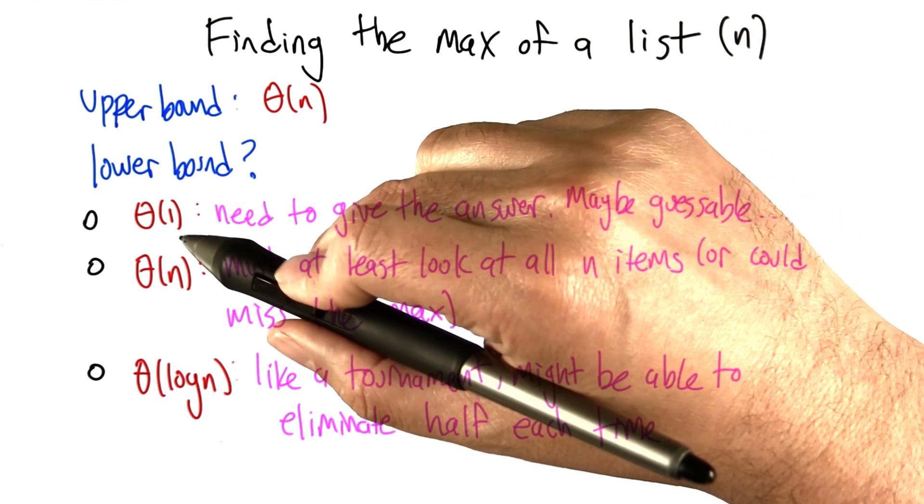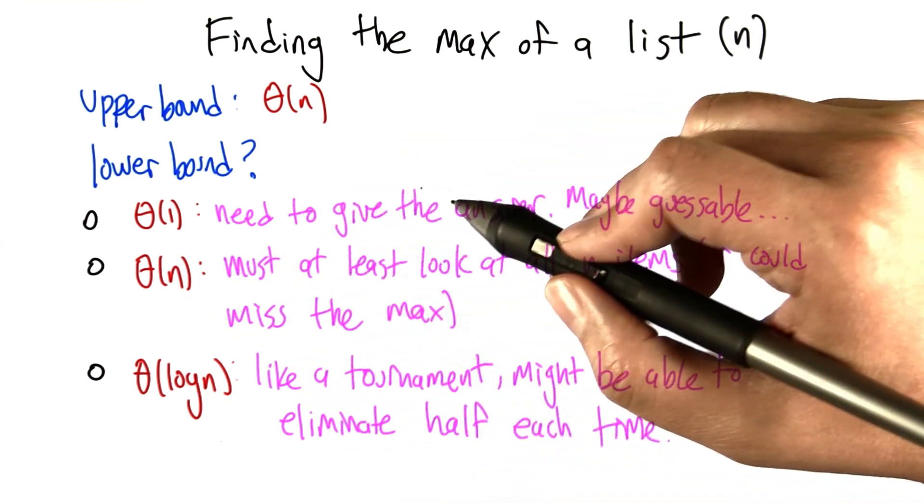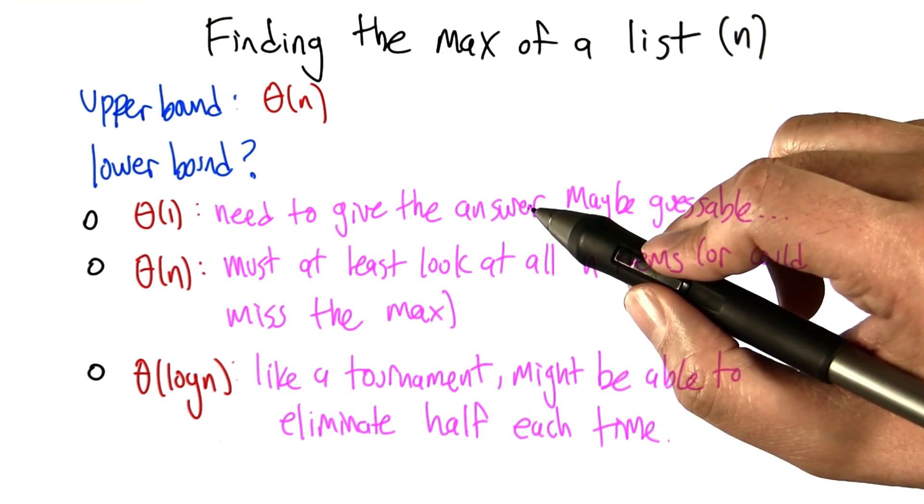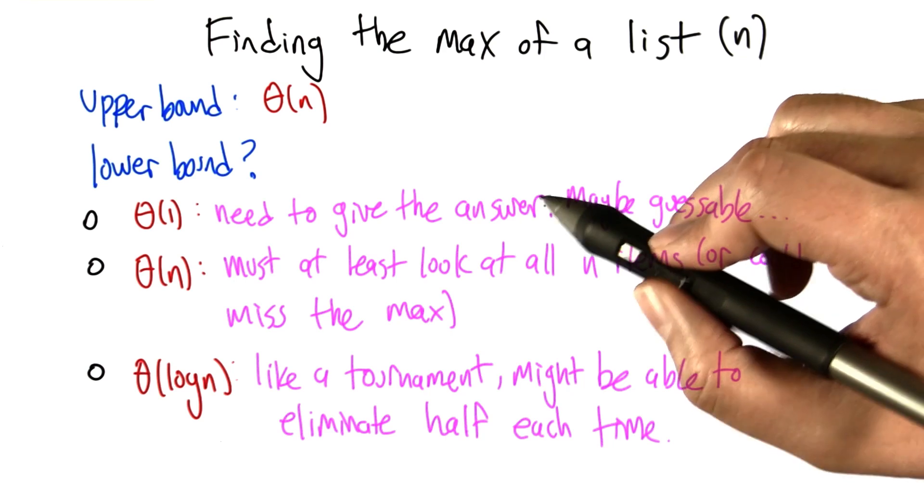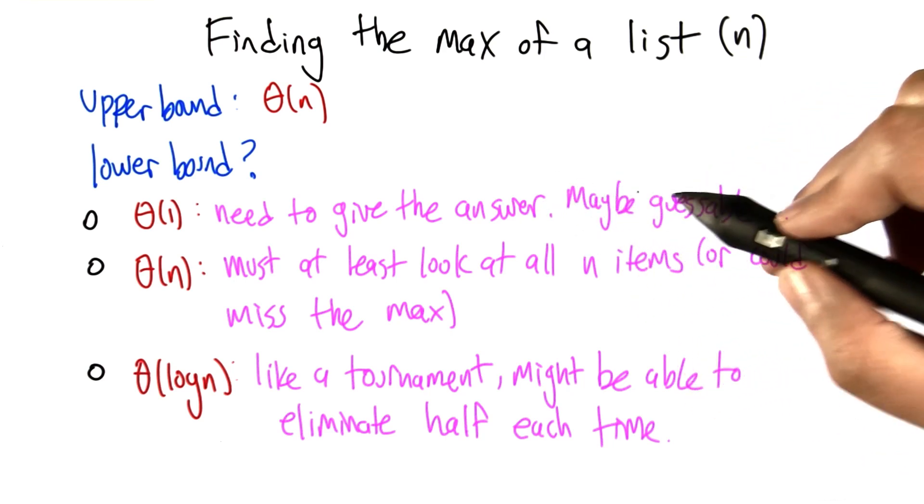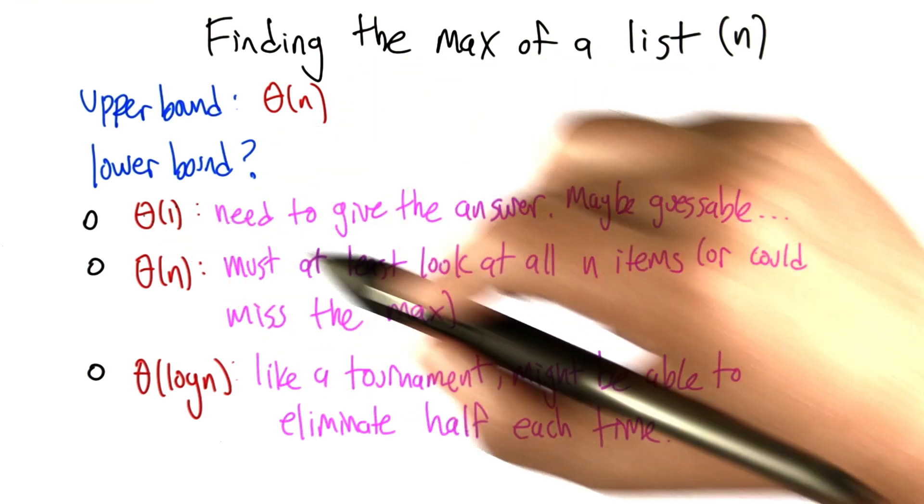One argument might be that constant time is a lower bound on this problem, because at the very least, you have to give the answer. It takes at least constant time to do that. It's possible you can even do that well. If you're trying to compute the max of a list and you guess the number, it may very well be the max. So that gives us a lower bound.